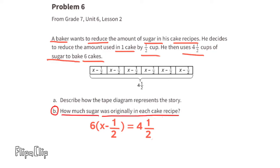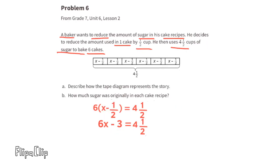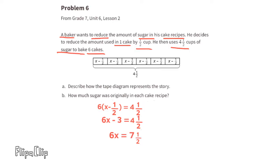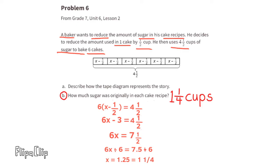How much sugar was originally used in each cake recipe? To solve for x: 6 times x minus one half gives 6x minus 3 equals 4.5. Add 3 to both sides: 6x equals 7.5. Divide both sides by 6: x equals 7.5 divided by 6, which is one and a quarter. So the original recipe used one and one fourth cups of sugar per cake.